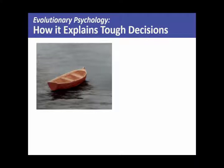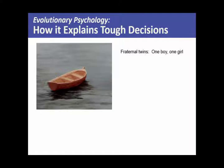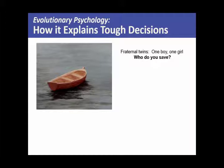Now we're going to do a little exercise — mark your answers on your own paper and I'll give you the answers. How evolutionary psychology explains tough decisions. Let's say you're out in a boat with your fraternal twins — one boy, one girl. The boat overturns, neither child can swim, you can swim, but there's nothing you can do to save both. One of those children is going to die and one you can save. Who do you save?